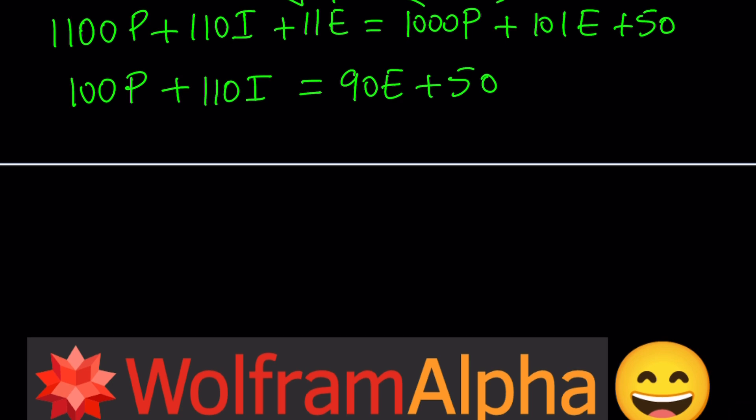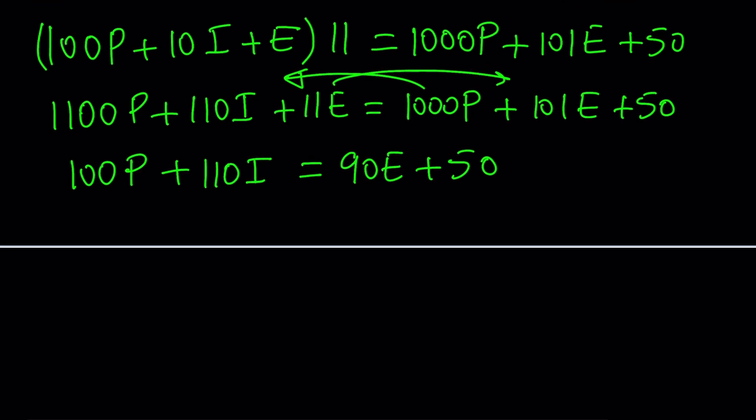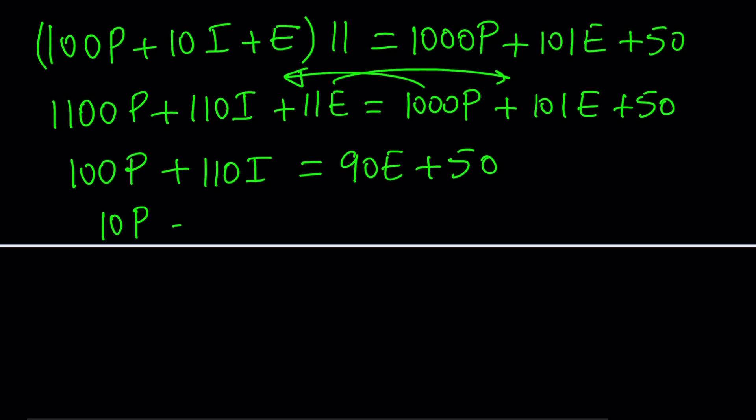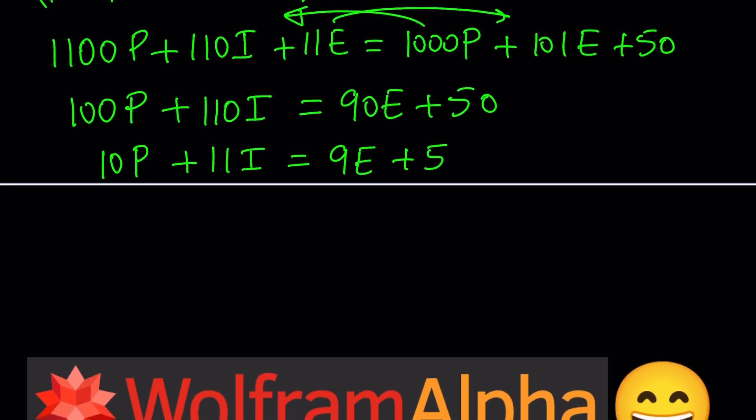At this point it makes sense to divide everything by 10, right? Because everything is divisible by 10. So let's do that. We get 10P + 11I = 9E + 5. At this point obviously one can go through pretty much all the cases, but we need to simplify this so we don't have to go through a ton of cases.